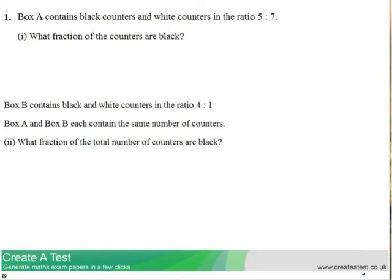We're going to start with part one. Box A contains black counters and white counters in the ratio of 5 to 7. We don't actually know how many counters we have altogether, but you'll find out quickly it doesn't matter. What fraction of the counters are black?